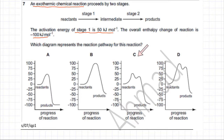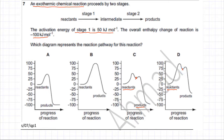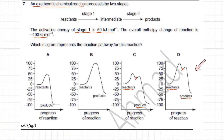Options C and D might be correct because in both diagrams the reactants first get converted to an intermediate, and then those intermediates get converted into products. Both of these are two-stage reactions.